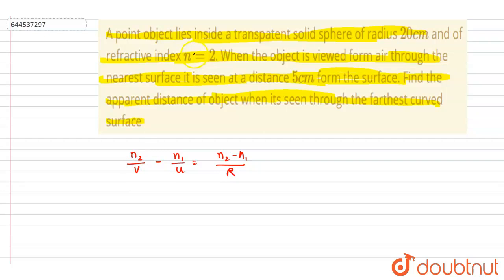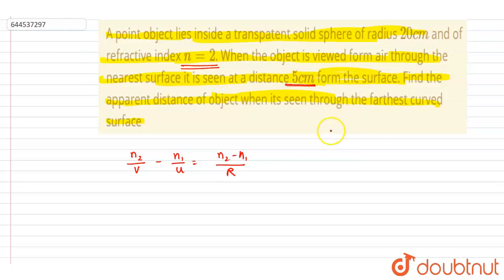The object is kept inside a medium whose refractive index is 2, so n1 equals 2. The observer is in air. The image is forming at a distance of 5 centimeter — it's seen at a distance of 5 centimeter from the surface — so the image distance v equals 5 centimeter.